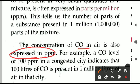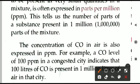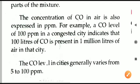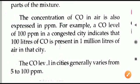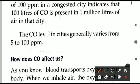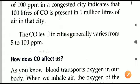In the case of carbon monoxide, concentration is expressed in ppm — full form is parts per million. For example, if the CO level is 100 ppm in a congested city, it means that in one million liters of air, 100 liters of carbon monoxide is present. Normally the CO level in cities varies from 5 to 100 ppm. 100 ppm of carbon monoxide is very harmful — it is highly polluted air.